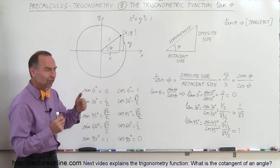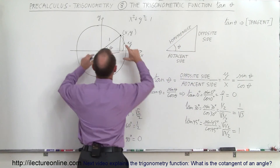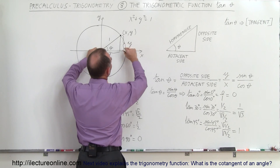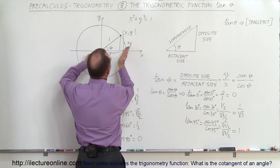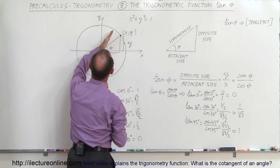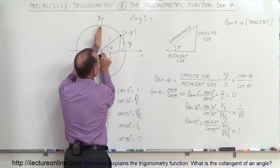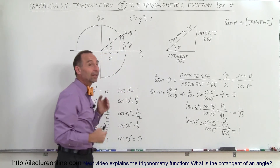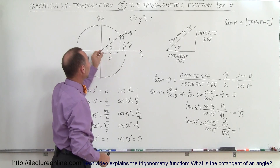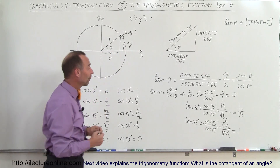Remember, the tangent is simply the ratio of the opposite side to the adjacent side. The opposite side is very small when the angle is small, so the tangent of small angles goes to 0. When the angle goes to 90 degrees, the opposite side gets big and the adjacent side gets small, so the tangent gets very big. As the cosine of 90 degrees approaches 0, the tangent should go to infinity.